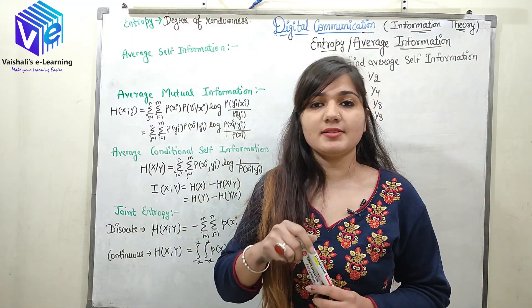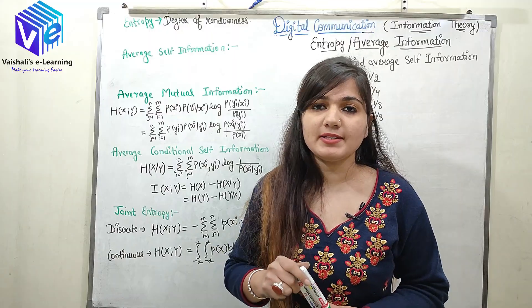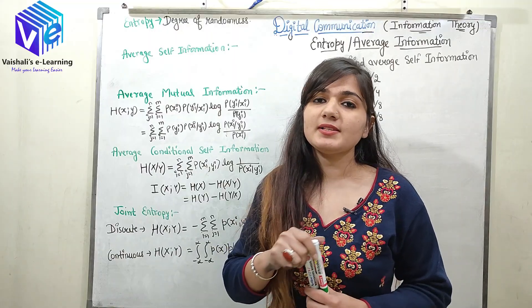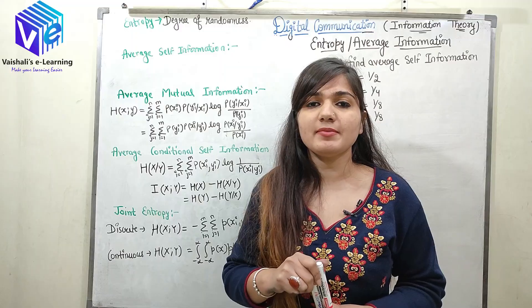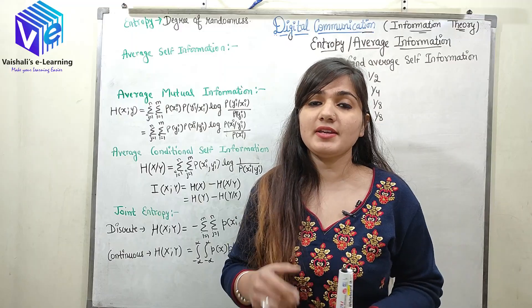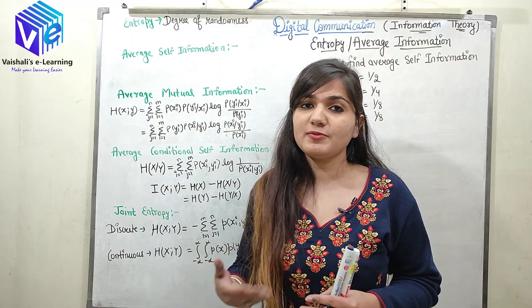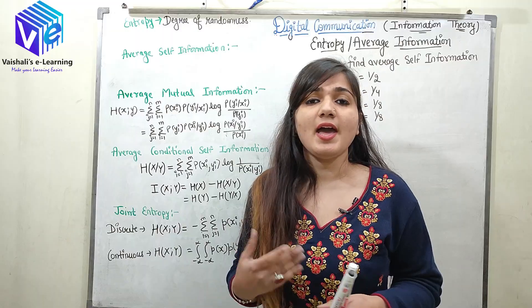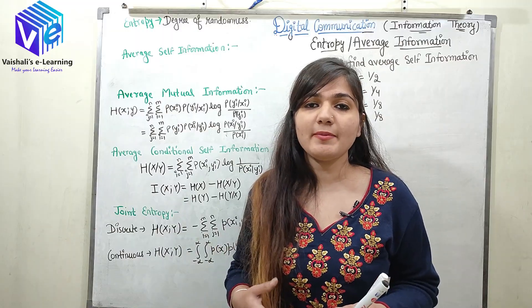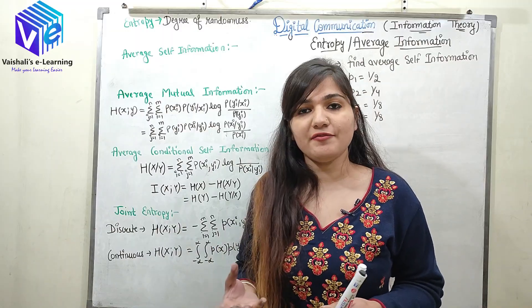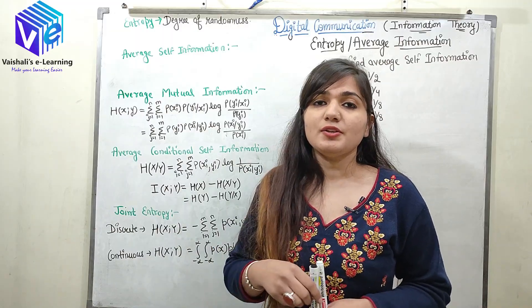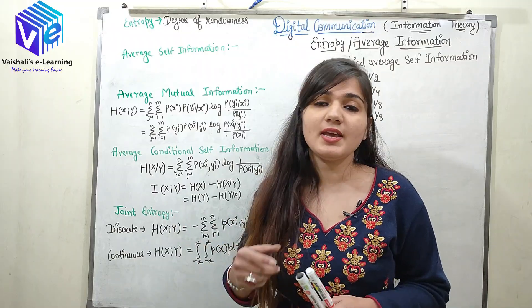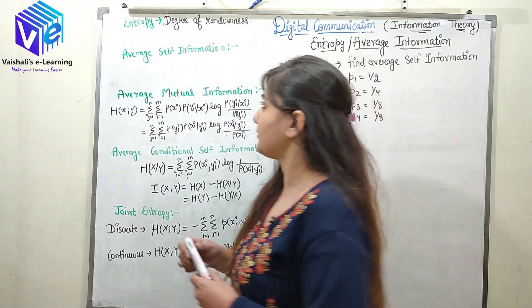A message is described by various probabilities of its symbols. Some symbols are highly probable, which means they carry less information. Some symbols are low probable, which means they carry high information. The average of all the information of all the symbols is denoted by the entropy.